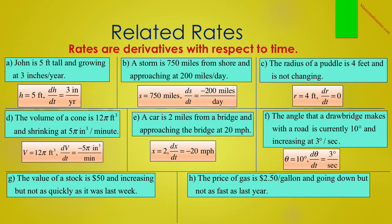In D, the volume of a cone is 12π cubic feet and shrinking at 5π cubic inches per minute. Therefore V equals 12π cubic feet, and DV/dt equals negative 5π cubic inches per minute — negative because the volume is shrinking. In E, a car is 2 miles from a bridge and approaching at 20 miles per hour. I'll choose X to be 2, and therefore DX/dt equals negative 20 miles per hour, because the distance from the car to the bridge is getting smaller.